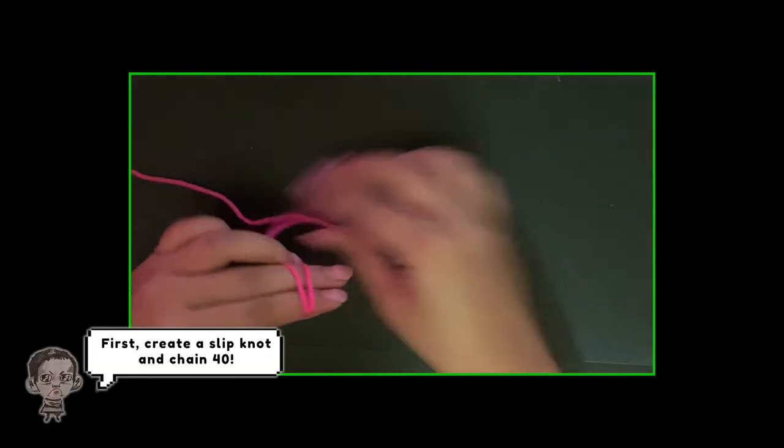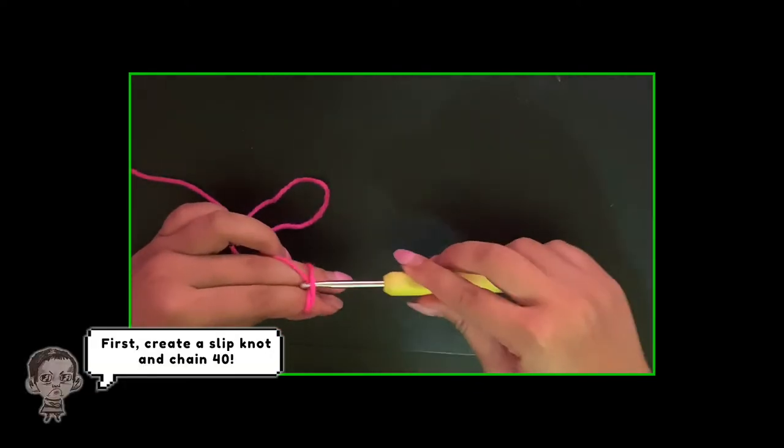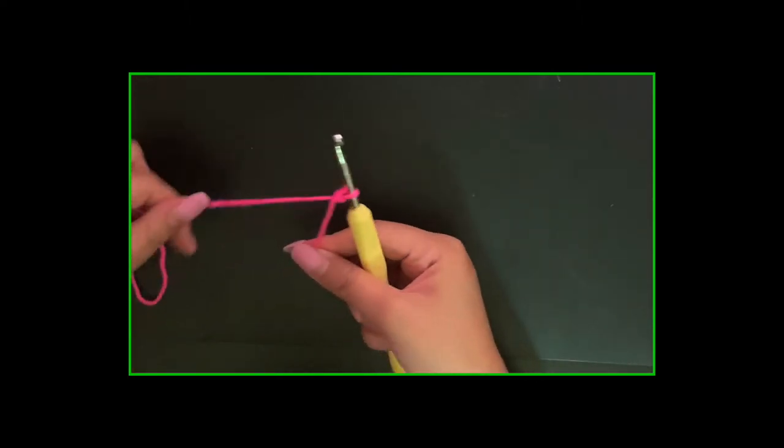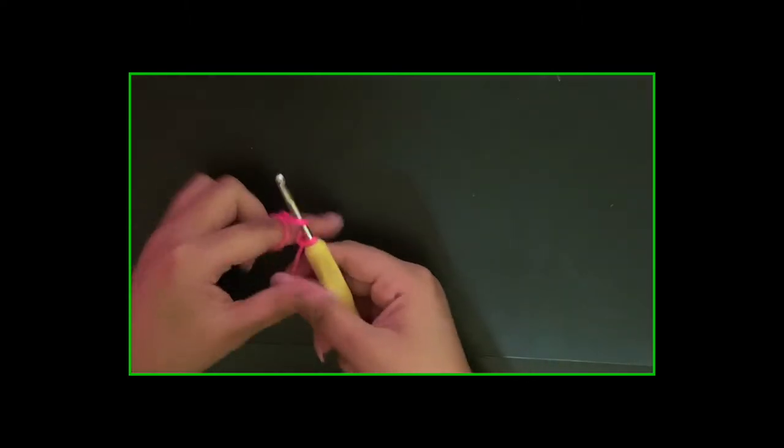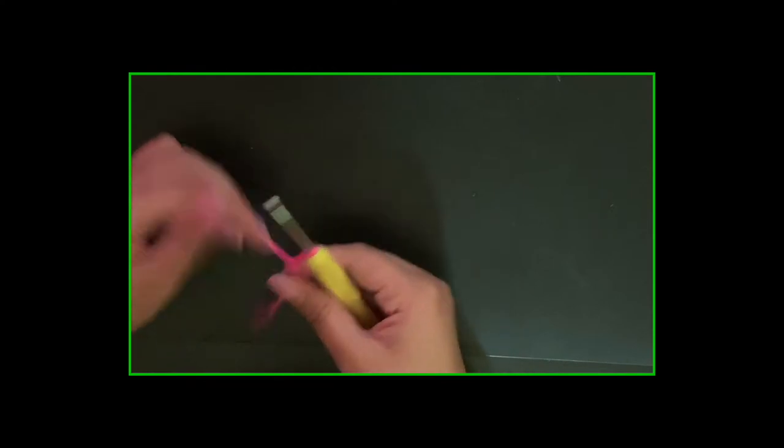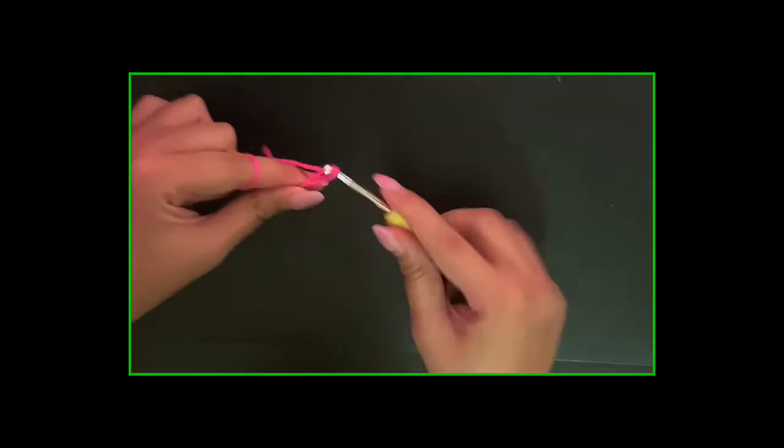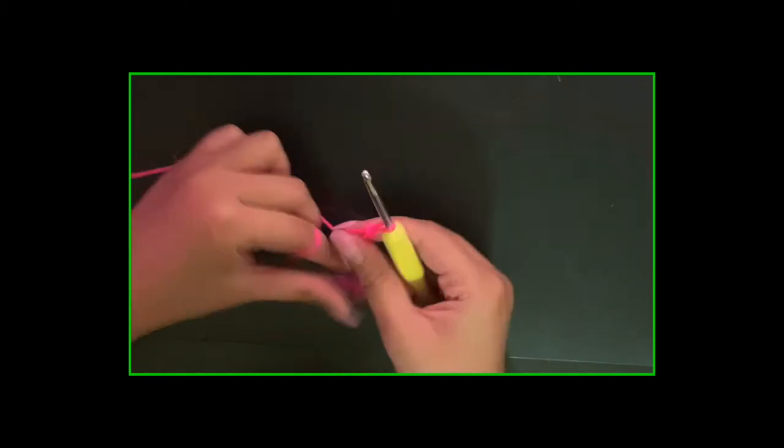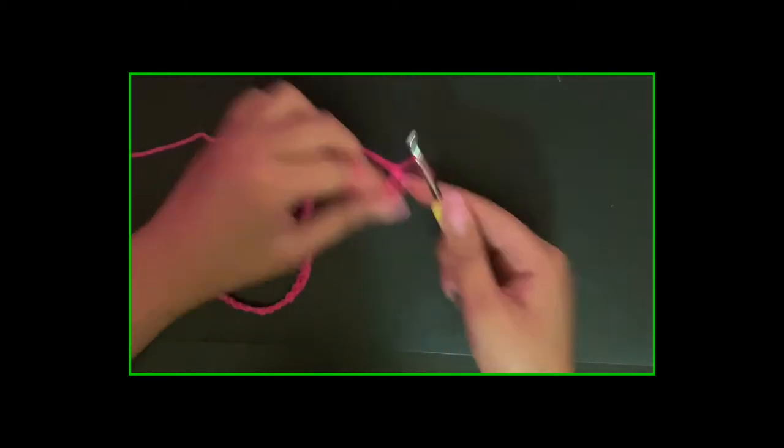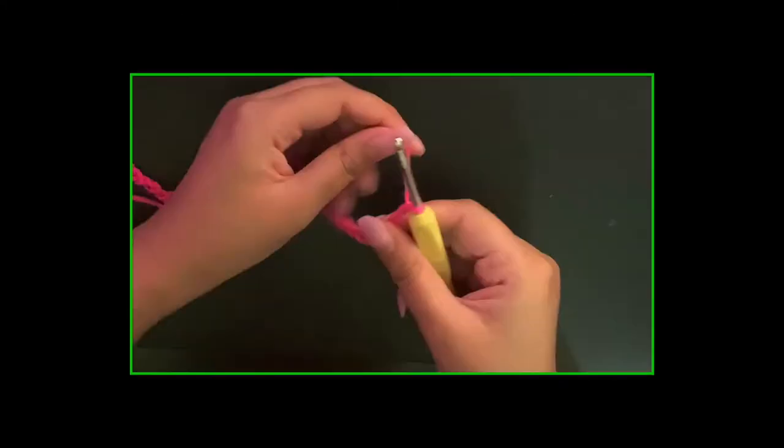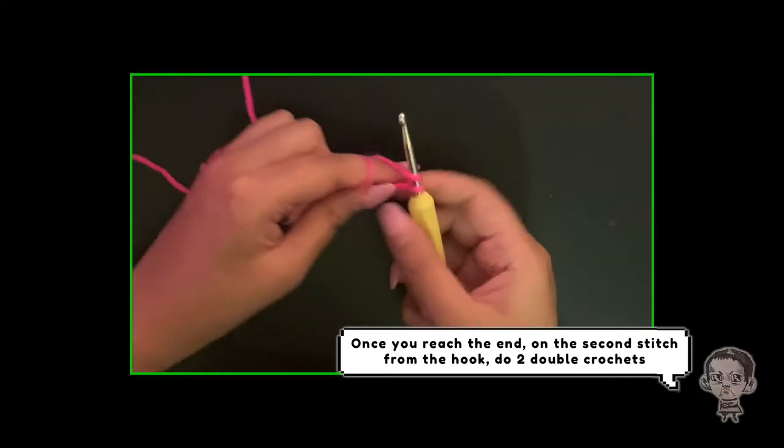First, create a slip knot and chain 40. Once you reach the end, on the 2nd stitch from the hook, do 2 double crochet.